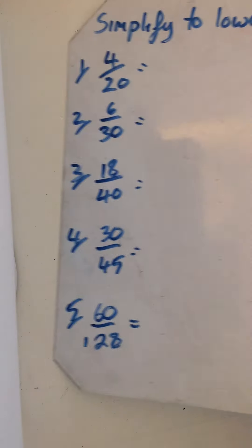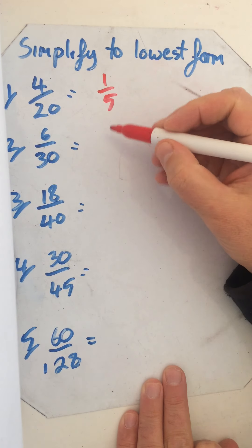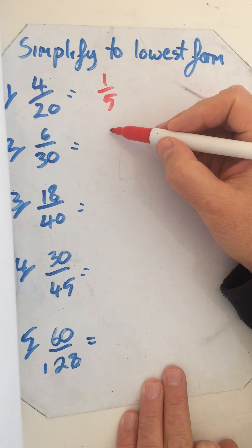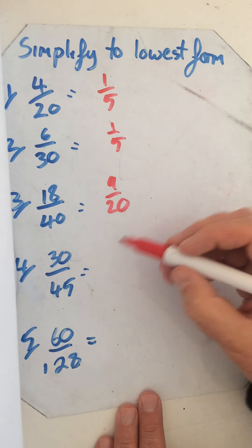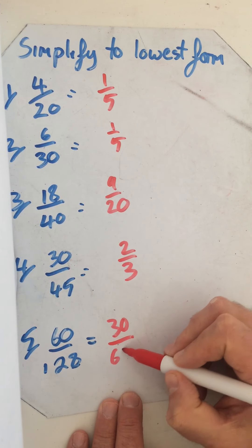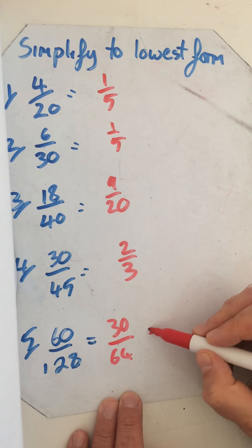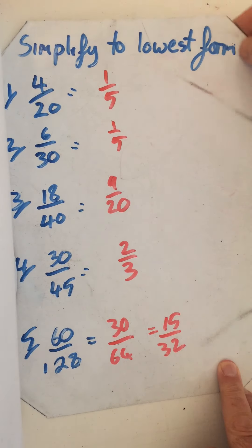Can you write out the questions and then the answers to these — just simplify those fractions. It shouldn't take you very long. Pause the video while you do that and then we'll move on. The answers: one fifth; divide both by six; nine twentieths; two thirds; and thirty over sixty-four — halve that — fifteen over thirty-two, which can't be simplified further.